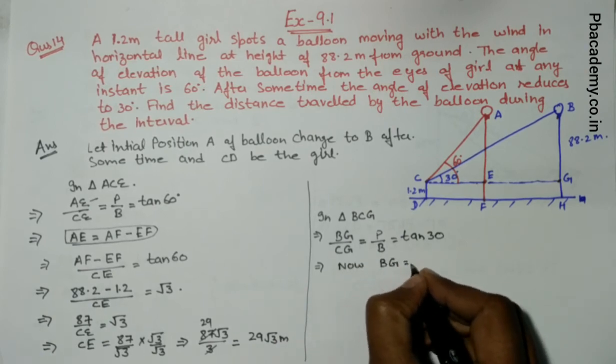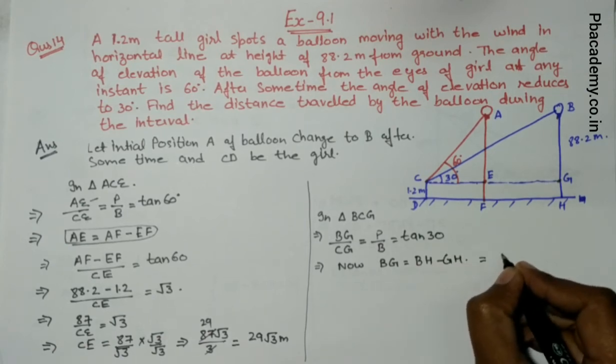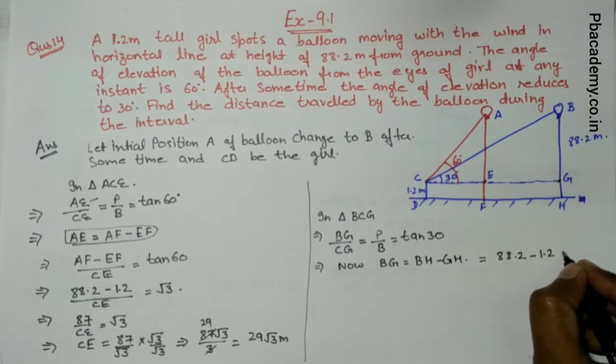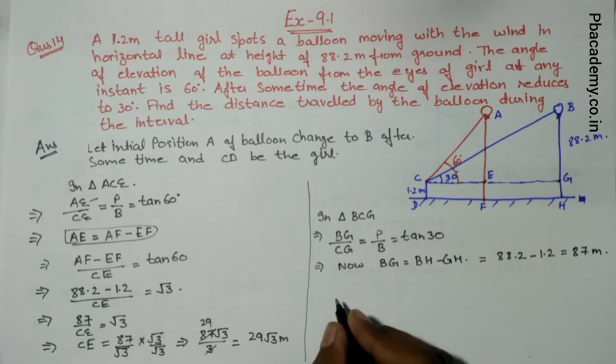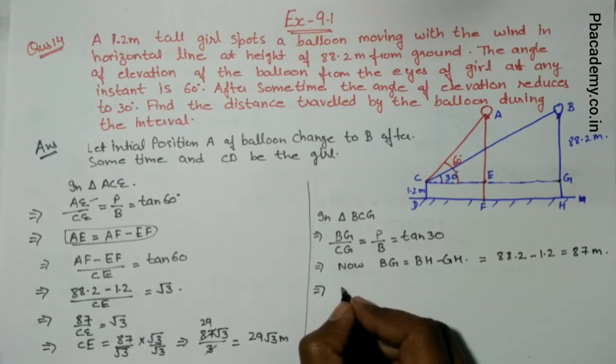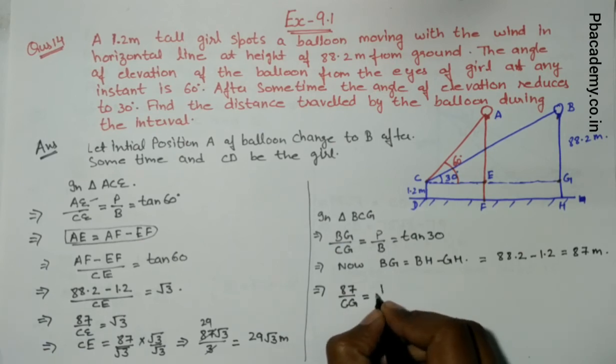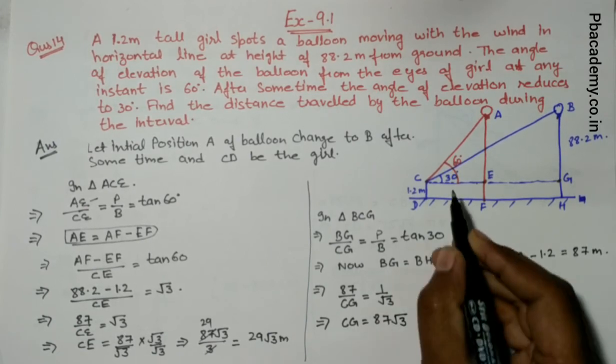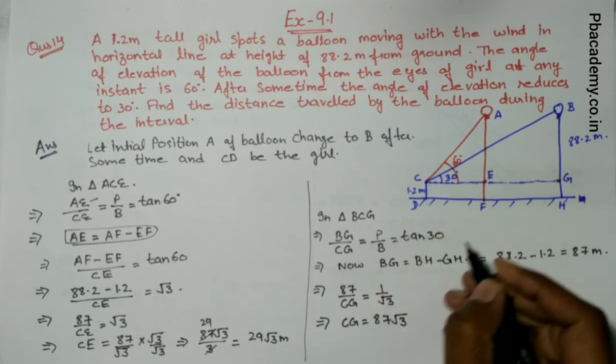BG equals BH minus GH. BH is 88.2 minus GH which is 1.2, so we find that it equals 87 meters. We put the values: BG is 87, CG we have to find. Tan 30 is 1 by root 3, so from here we conclude that CG equals 87 root 3. CE we found as 29 root 3.